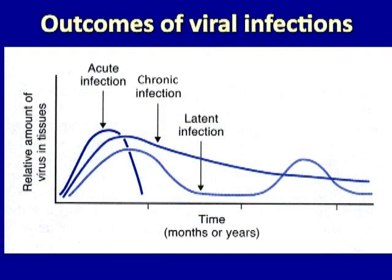Viruses typically cause one of three types of infection. An acute infection is one in which the manifestations of disease occur acutely and then resolve as the virus is eliminated from the host — an immune response is triggered that causes the virus to be completely eliminated, and the disease disappears and does not recur. In contrast, chronic infections are viral infections that are not adequately cleared from the host, and thus a continuation of damage due to the virus may persist over a very long period of time, sometimes indefinitely.